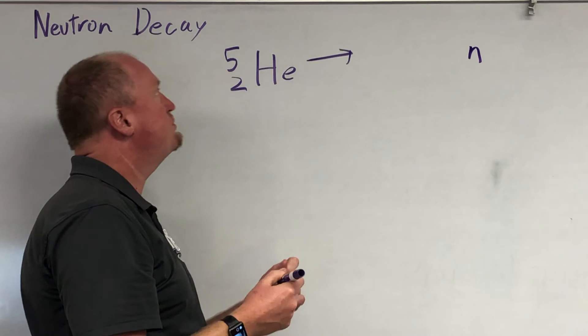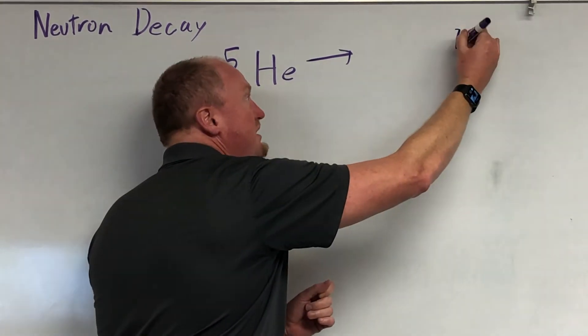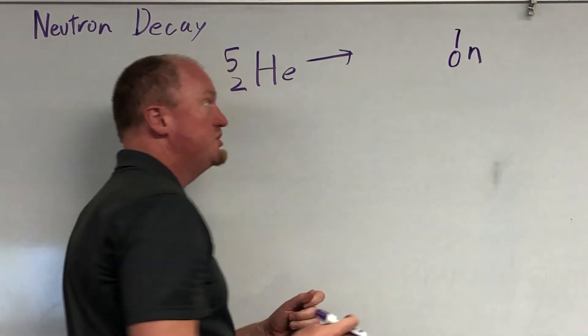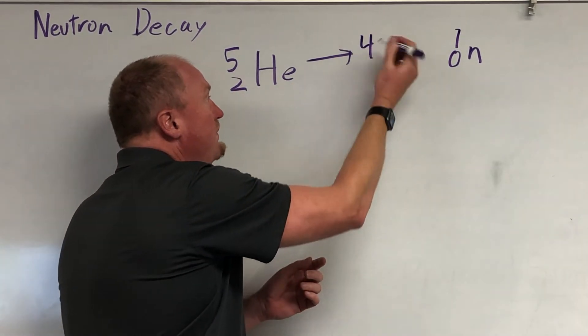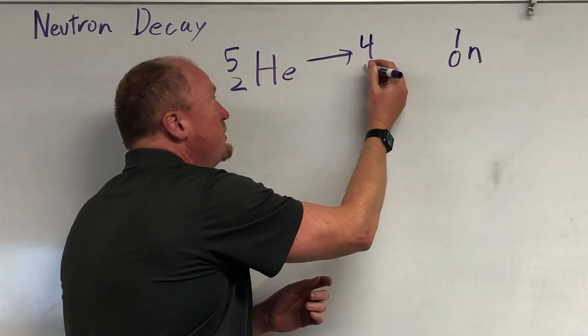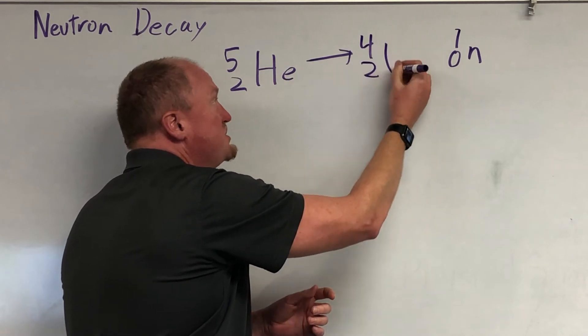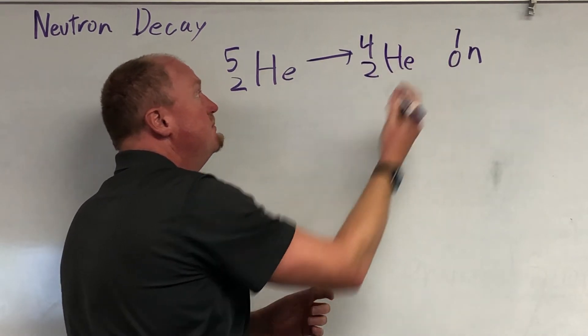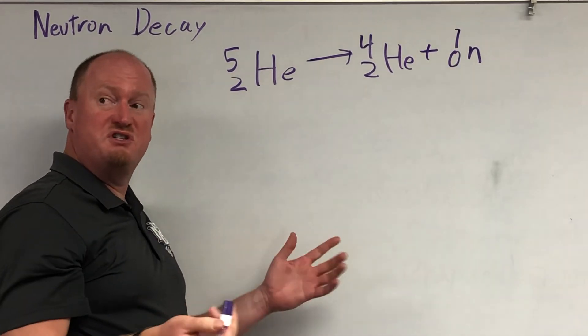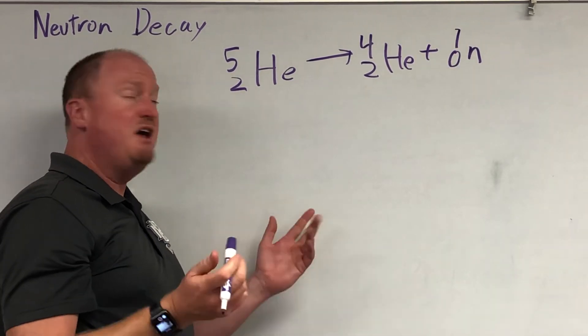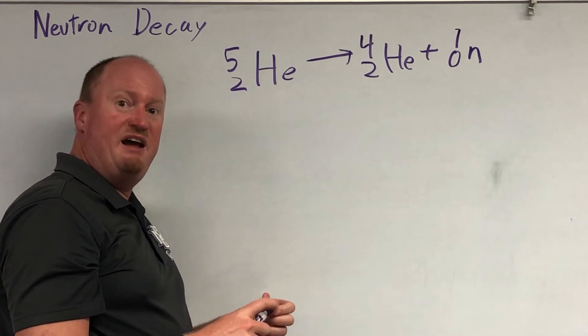And the neutron has a mass of 1, but no charge. Now, when you take that out, 5-1 is 4. 2-0 is 2. It stays helium, but now it's helium-4, which is the most common type of helium, very stable, and it's happy.